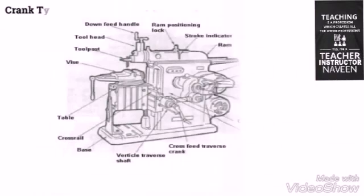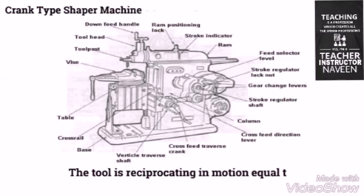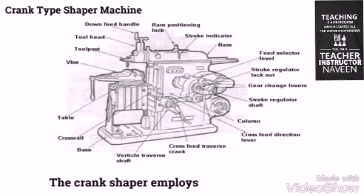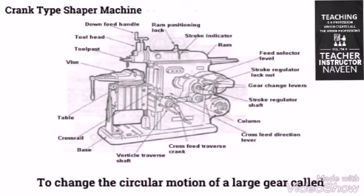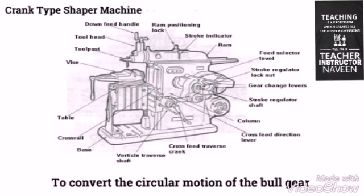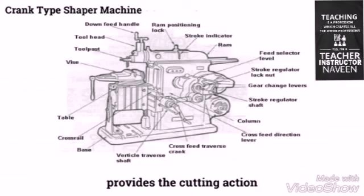Crank type Shaper Machines are very common types of Shaper Machines, used to hold the workpiece on the table. The tool is reciprocating in motion equal to the length of the stroke desired, while the work is clamped in position on an adjustable table. The Crank Shaper employs a crank mechanism to convert the circular motion of a large gear called Bull Gear into reciprocating motion of the RAM. The RAM carries a tool head at its end and provides the cutting action.